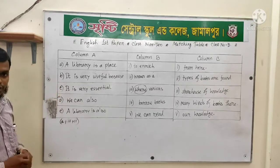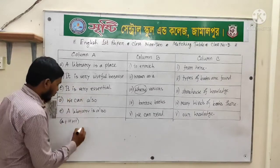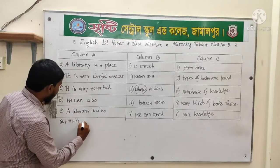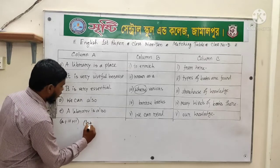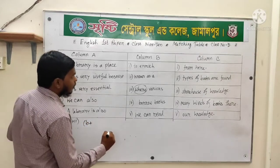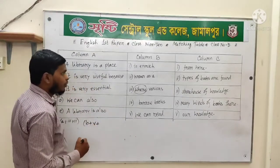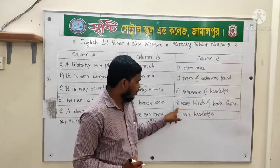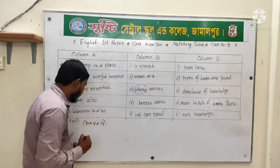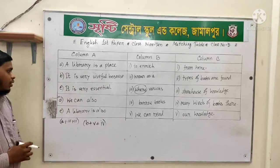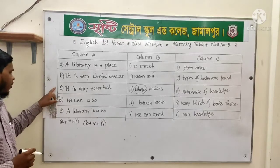Before going to sentence number three, let me rewrite the answer for the second sentence. B plus, from column two we have found number 5, and from column C we have used number 4. This is our answer for the second sentence.